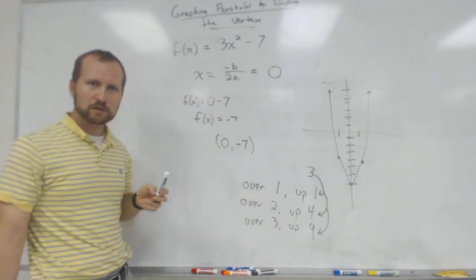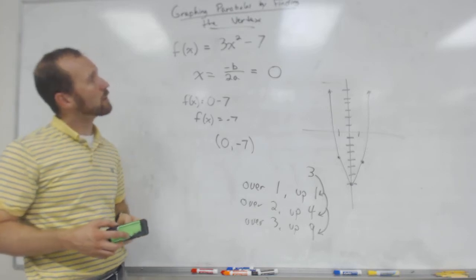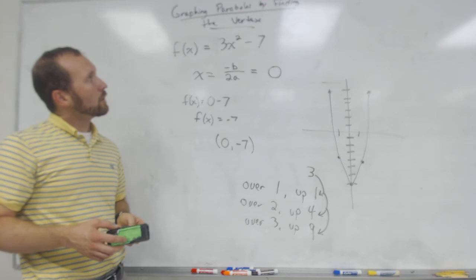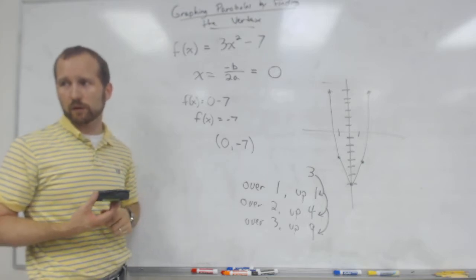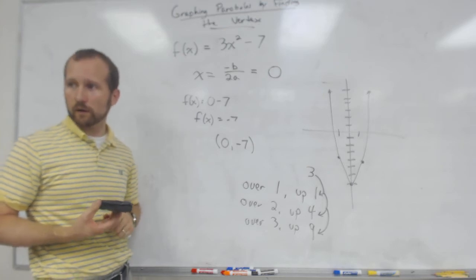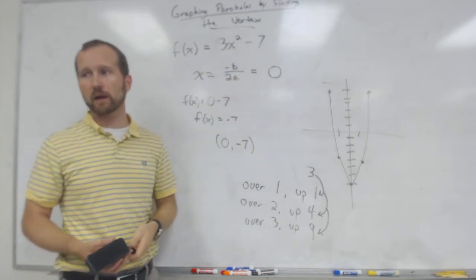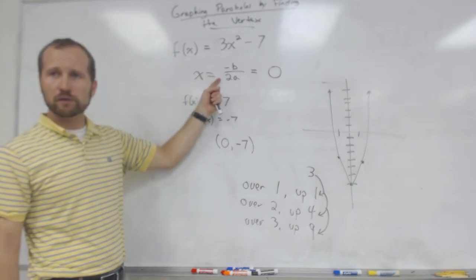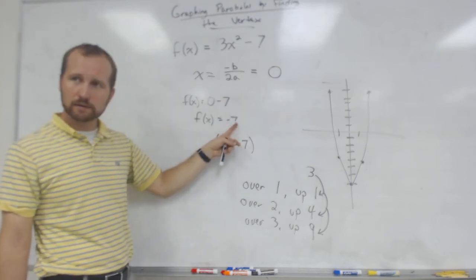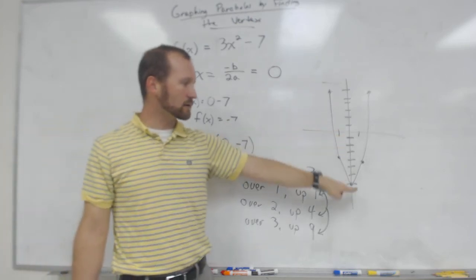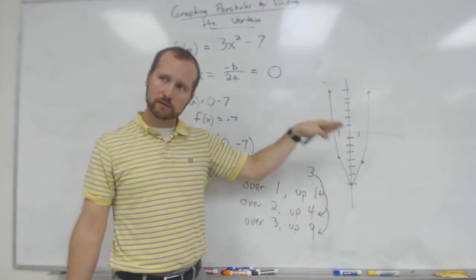To summarize the steps: Step 1, use -b/2a to find the x-part of your vertex. Step 2, plug that x-value into the equation to find the y-part of your vertex. Step 3, plot your vertex on the graph. Step 4, use the pattern — over 1 up 1, over 2 up 4, multiplied by the coefficient of x² — to plot the other four points. A student asks: if there's no b term, will the vertex always be at c? Yes, because b = 0 makes x = 0, and plugging 0 in leaves just c.